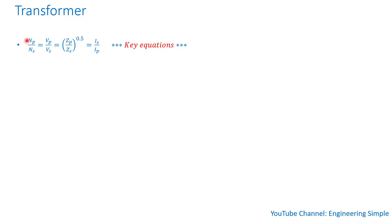The equation you see on the screen is a key equation. Transformers have a primary side and a secondary side — you take the voltage or power and transform it from one side to the other, stepping up or stepping down. Each winding has a number of turns to get the right voltage. The equation states: N_primary / N_secondary = V_primary / V_secondary = √(Z_primary / Z_secondary) = I_secondary / I_primary.